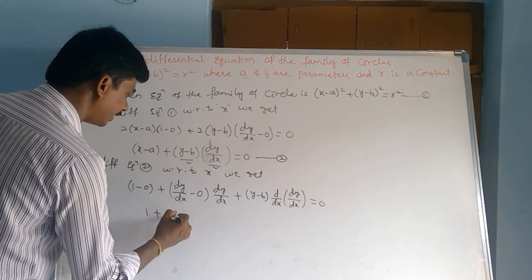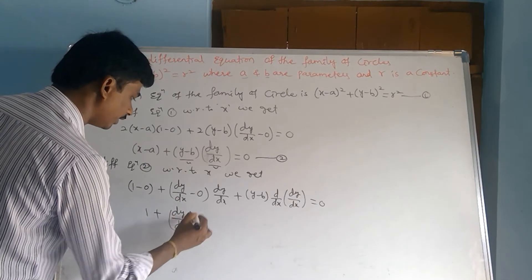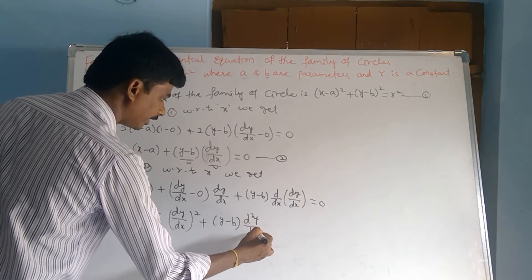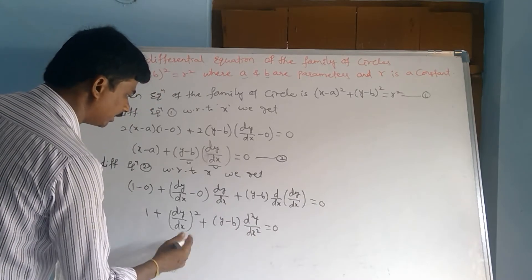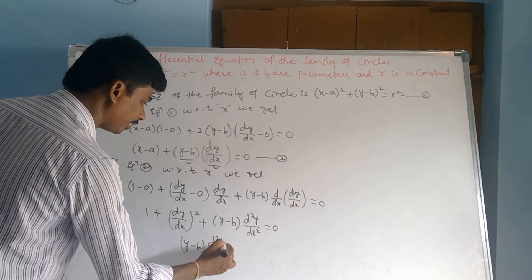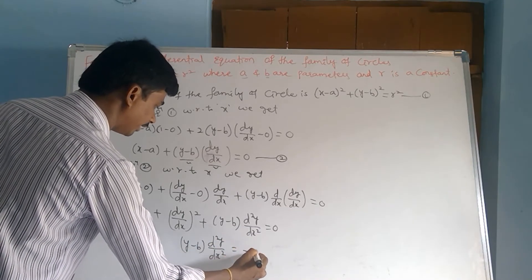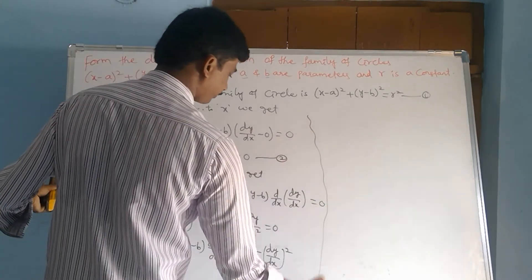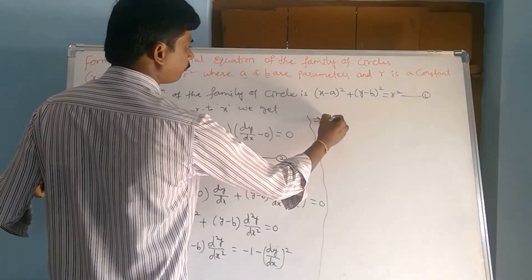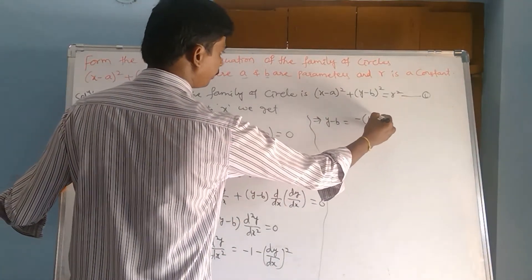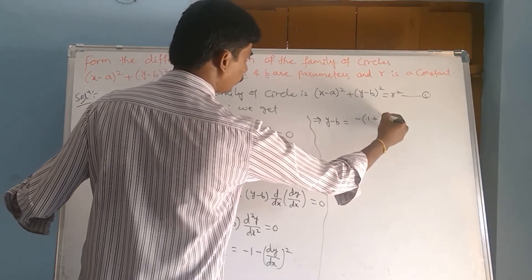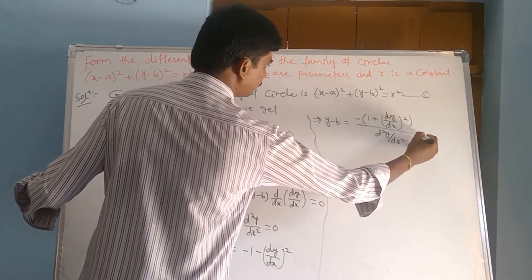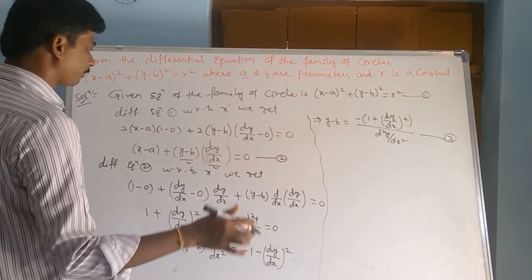This simplifies to: 1 plus (dy/dx)² plus (y minus b) times d²y/dx² equals 0. Therefore (y minus b) times d²y/dx² equals minus 1 minus (dy/dx)². That implies y minus b equals minus of [1 plus (dy/dx)²] divided by d²y/dx². This is equation number 3.